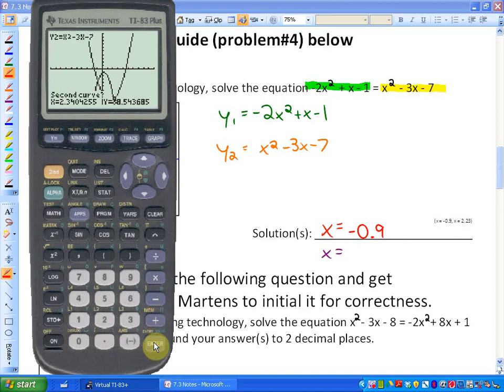So in the first curve, go close to the intersect, hit enter. Second curve, go close to the intersect, which it already is, press enter. And the guess should be close to the intersect, press enter again, and the value of x that makes the two sides equivalent is 2.23. So that's your second solution.